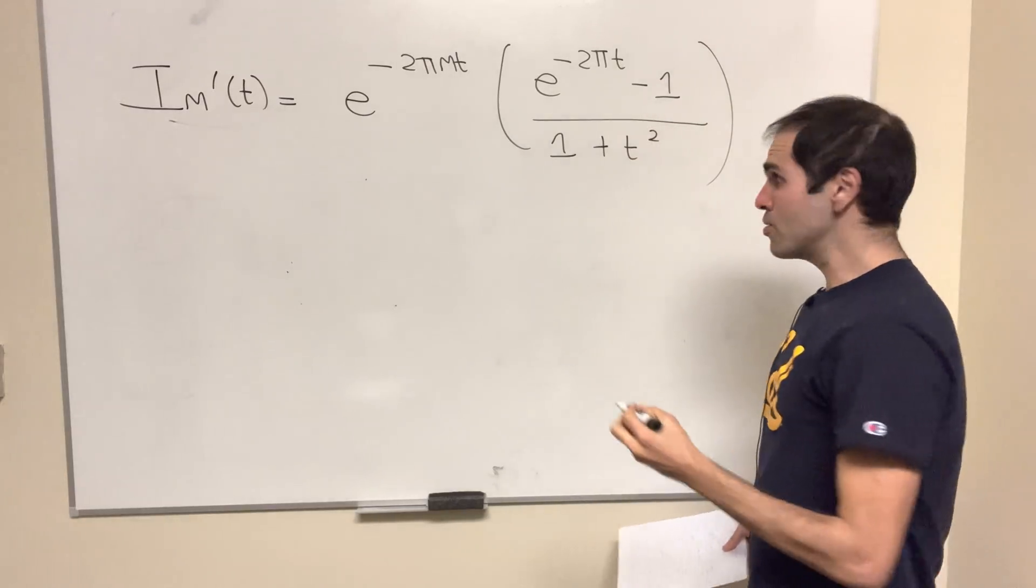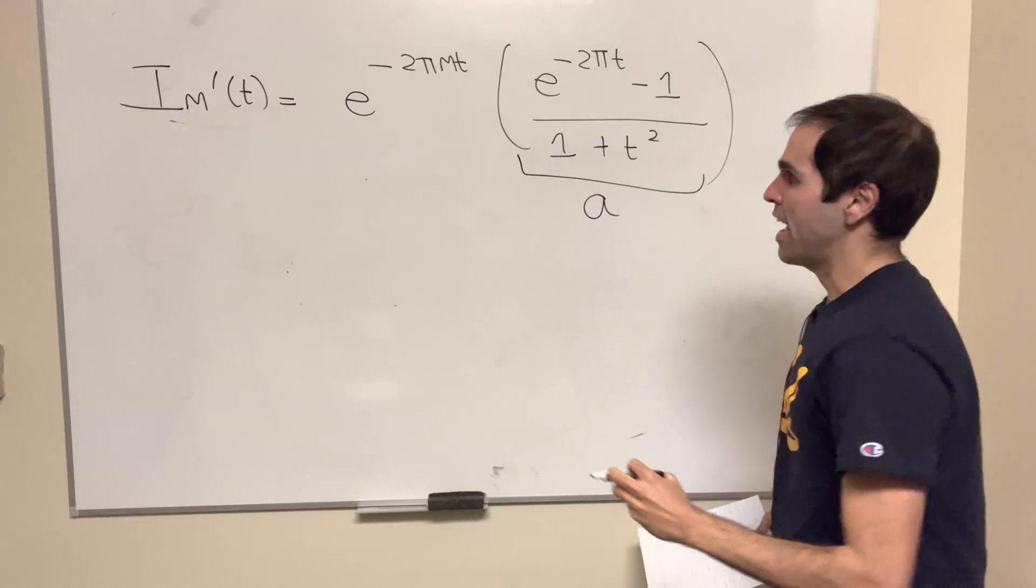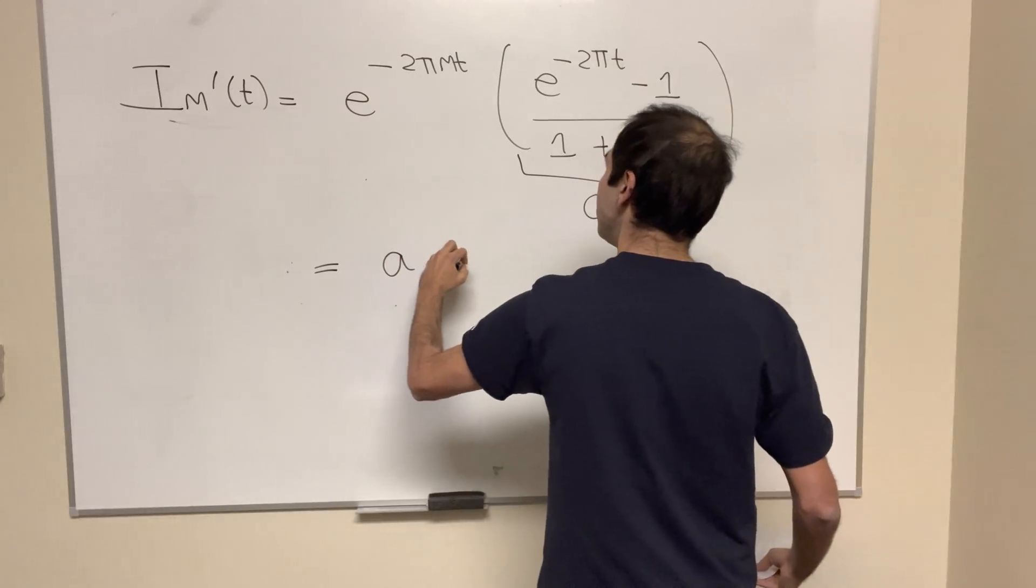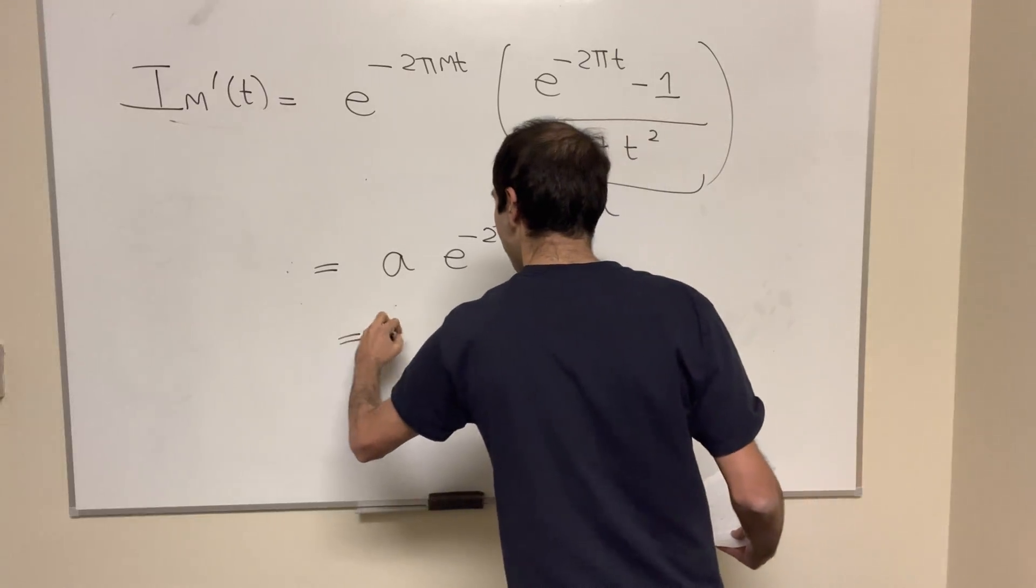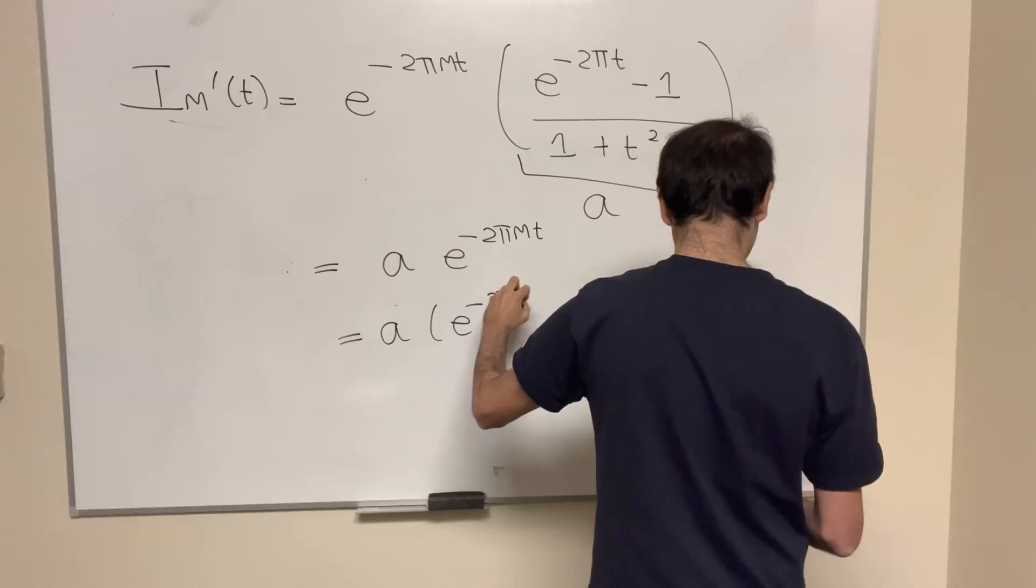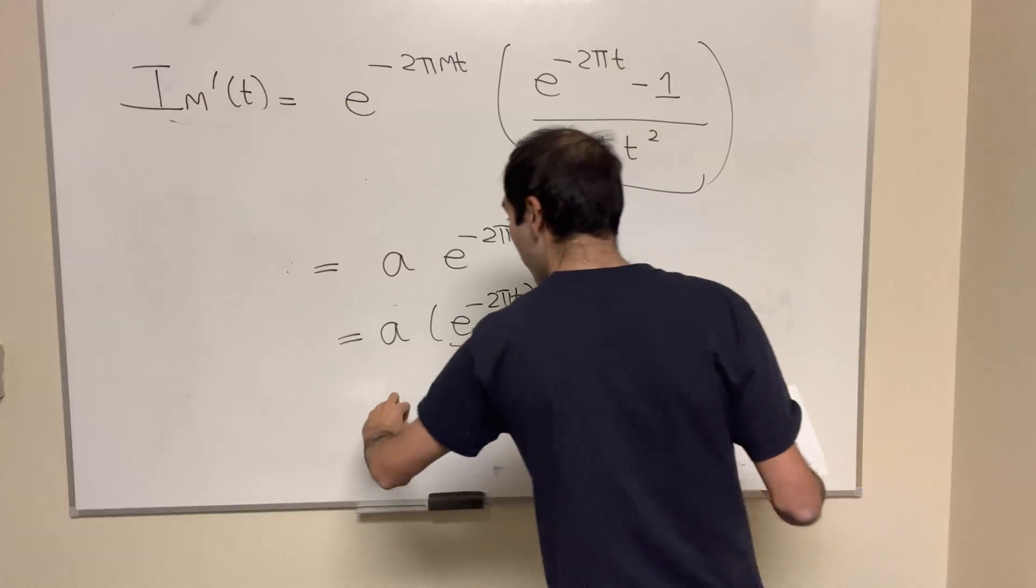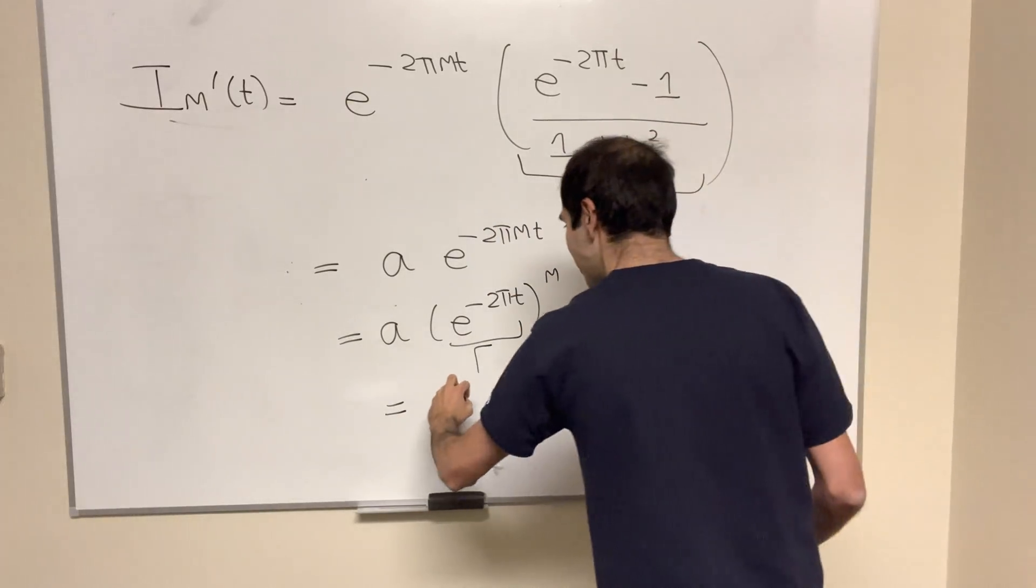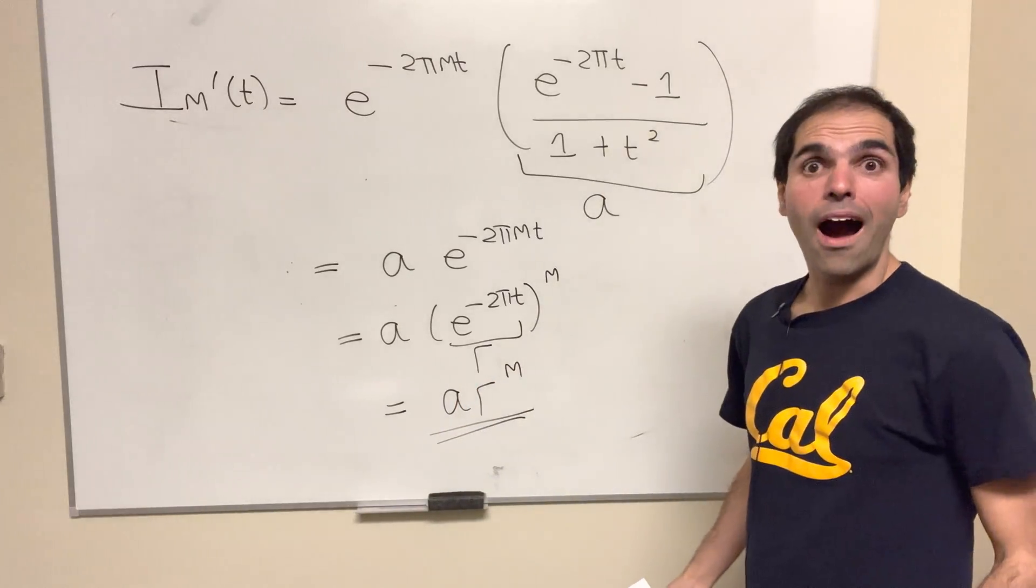And here's a cool thing, so this doesn't depend on m at all, so let's call this a. So this becomes a·e^(-2πmt), but that's just a·e^(-2πt)^m, but then if you call this r, we get that the derivative of those functions is just a·r^m. Wow!